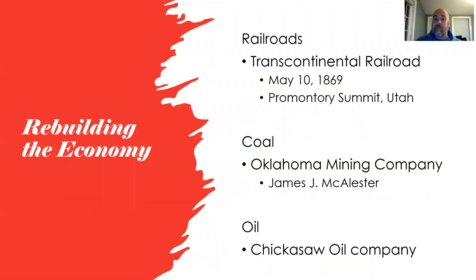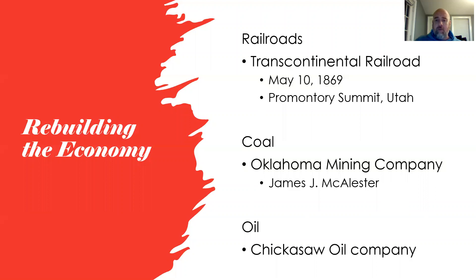The Katy line was the first railroad laid in Indian territory. From there, railroads expanded and became part of what we have today. Coal mining also began developing in Oklahoma during this period. James J. McAllister started the first coal mining company, simply called the Oklahoma Mining Company. He had become a citizen of both the Chickasaw and Choctaw Nations and split royalties with the Choctaw Nation. All coal mines were in the eastern part of the state.